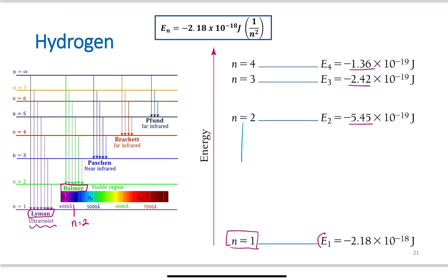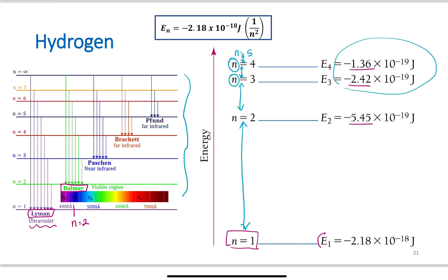These values are drawn to scale. The distance from n equals 1 to n equals 2 is fairly large; the distance from n equals 2 to n equals 3 is a lot smaller; n equals 3 to n equals 4 is even smaller. As we increase those energy levels, they get closer and closer together as we go higher up in energy shells.